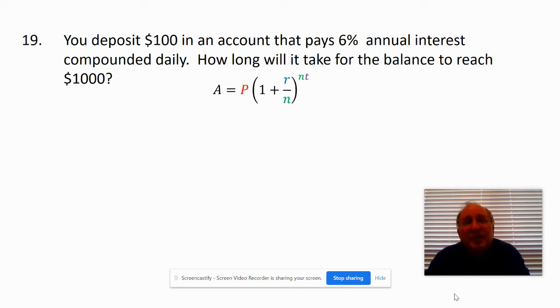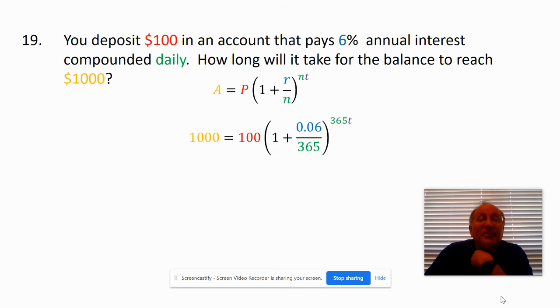N is how many times it's compounded, and then times time, which is in years. So basically the A is the $1,000, the principal is $100.